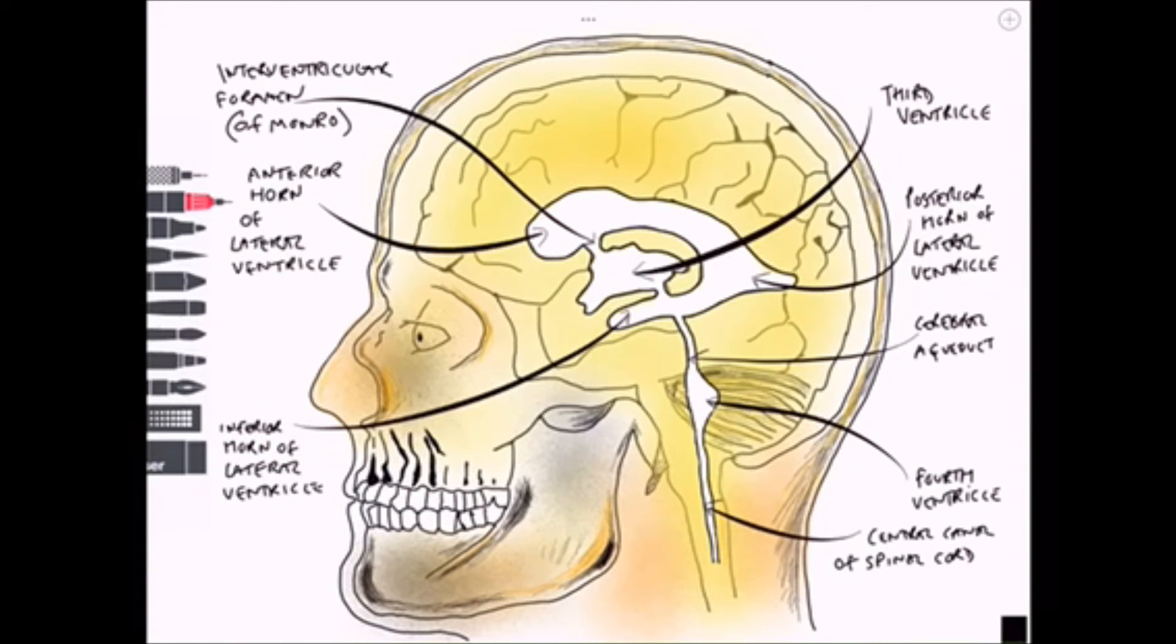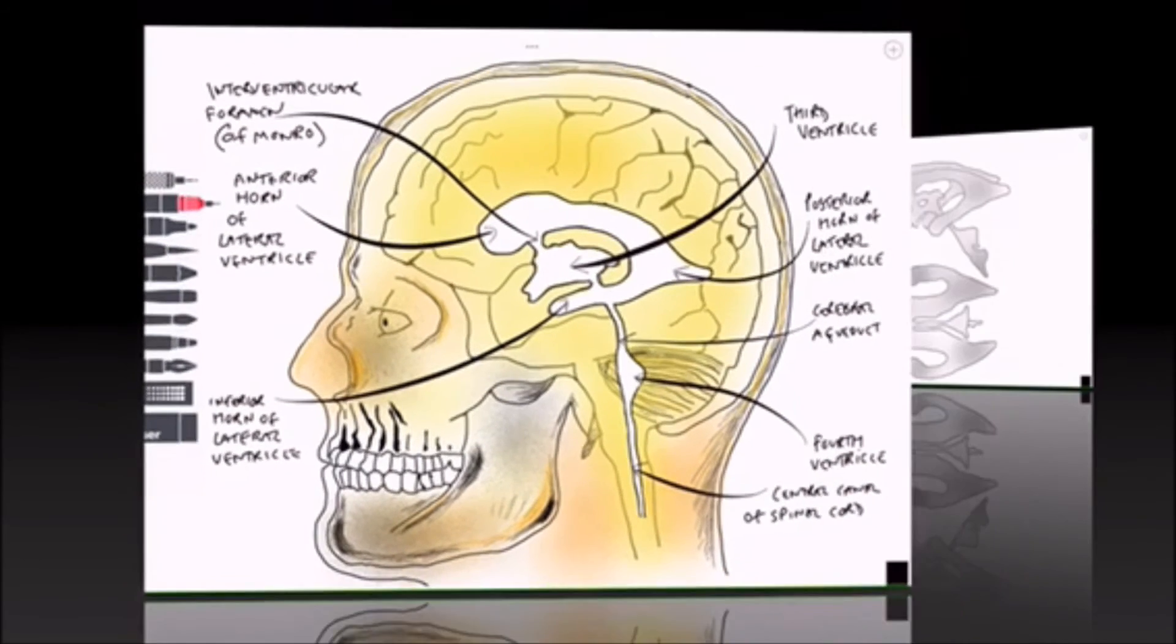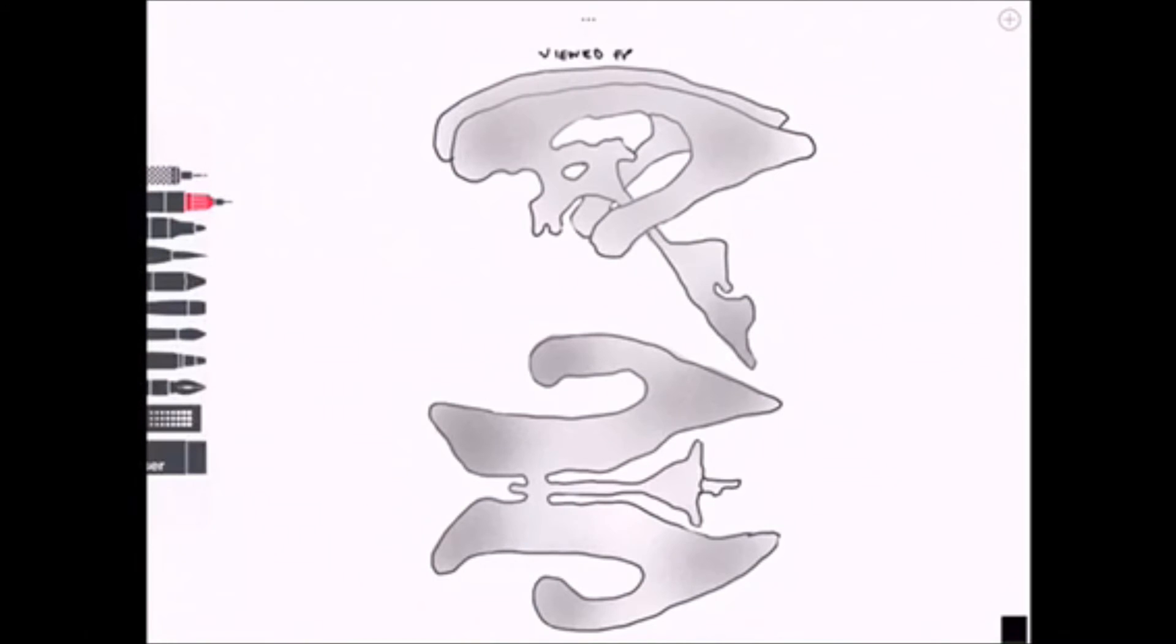So that pretty much completes our simple picture of the ventricular structures. Now we can have a look at them in an isolated view—one at the top viewed from the left, viewed laterally, and one as viewed from above.